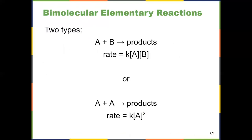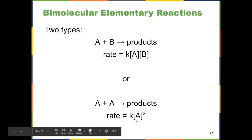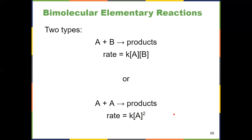We also have bimolecular elementary reactions — bimolecular means two molecules. There are two types depending on whether the molecules are the same or different. With two different molecules A and B coming together to form products, the rate is first order with respect to both A and B: rate = k[A][B]. With a bimolecular reaction where the reactant is the same, it's second order with respect to that reactant: rate = k[A]². Both types are second order overall. These could be the whole reaction or just part of a more complex mechanism.